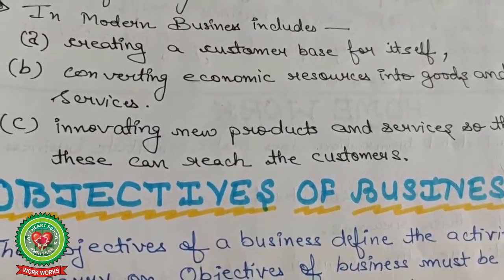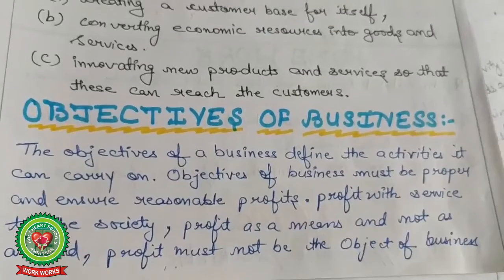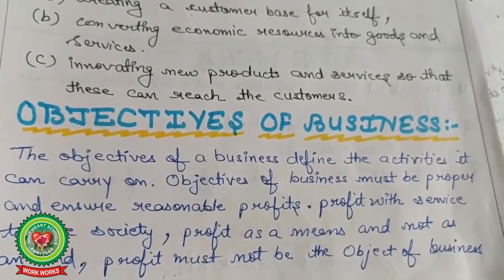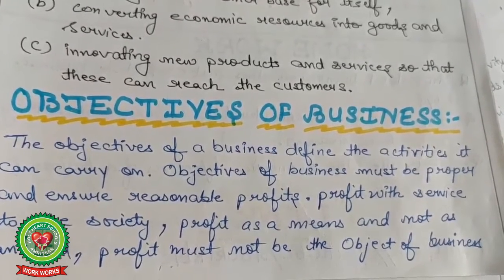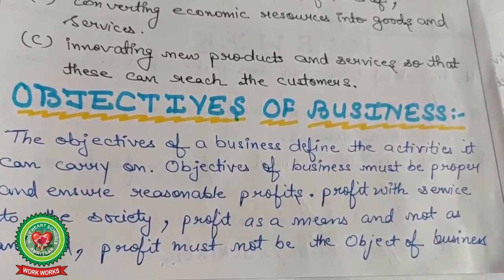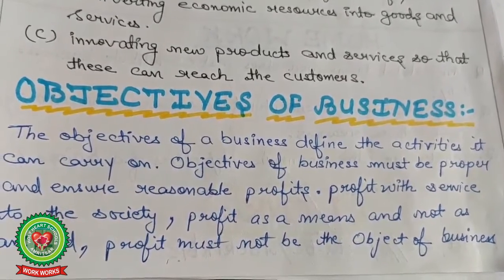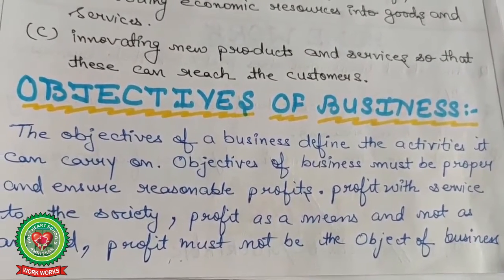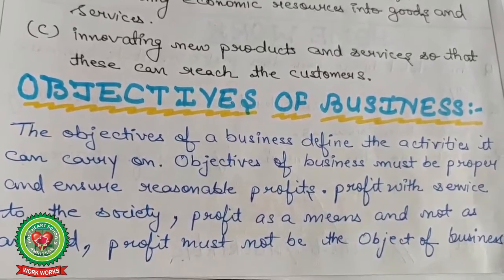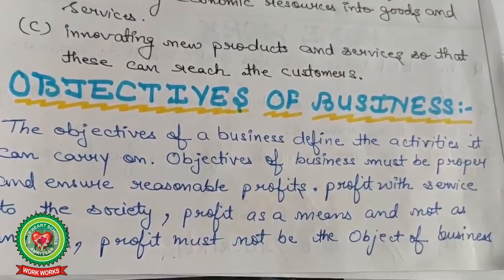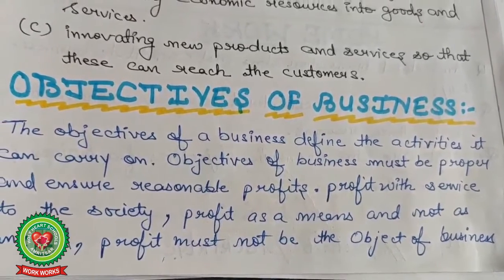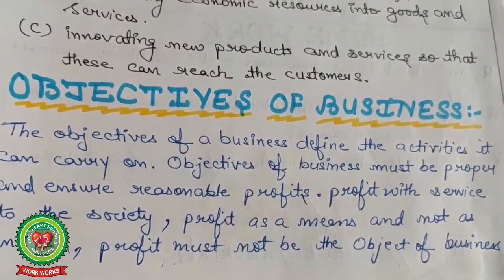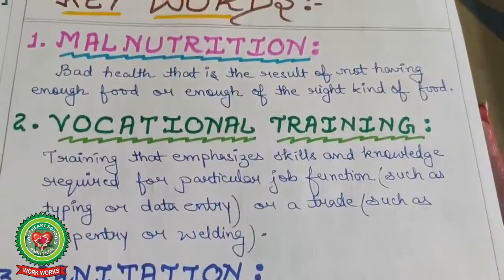The objectives of business define the activities it can carry on. Objectives of business must be proper and ensure reasonable profits with service to the society. Profit with service to society means: expect profit, but after satisfying consumer needs and wants. Profit is a means and not an end — it must not be the sole objective. Multiple objectives are required regarding business.